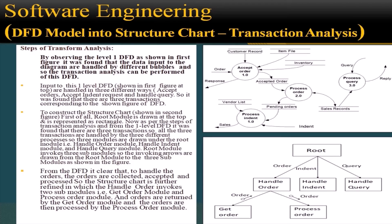Next is how to transform this DFD into the structure chart. The level 1 DFD is created by decomposing the context diagram further. The sales process is decomposed into sub-processes: accept order, process order, and process query or process indent. Inputs to this DFD are handled in three different ways: accept orders, accept indent request, and handle query. It was found that there are three transactions corresponding to the DFD.